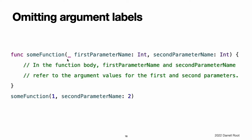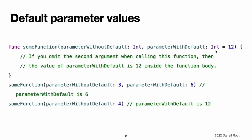If you do not want an argument label for a parameter, write an underscore instead of an explicit argument label for that parameter. If a parameter has an argument label, the argument must be labeled when you call the function. Default parameter values. You can define a default value for any parameter in a function by assigning a value to the parameter after that parameter's type. If a default value is defined, you can omit that parameter when calling the function. Place parameters that do not have default values at the beginning of a function's parameter list, before the parameters that have default values. Parameters without default values are usually more important to the function's meaning, and writing them first makes it easier to recognize that the same function is being called regardless of whether any default parameters are omitted.